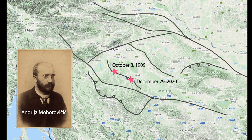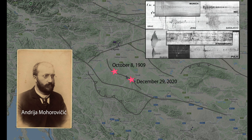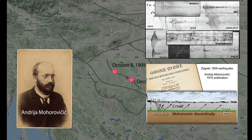This proved to be a milestone event in seismology. By scrutinizing the P and S seismic wave arrivals throughout Europe, his work resulted in the discovery of the Mohorovičić discontinuity, or the Moho, which is the boundary between the Earth's crust and the mantle.